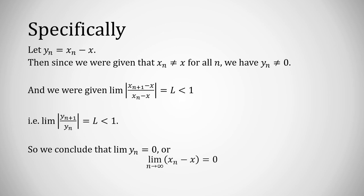But yn was exactly xn minus x. So the limit as n approaches infinity of xn minus x is 0, based on the ratio test for sequences. Okay, all well and good so far.